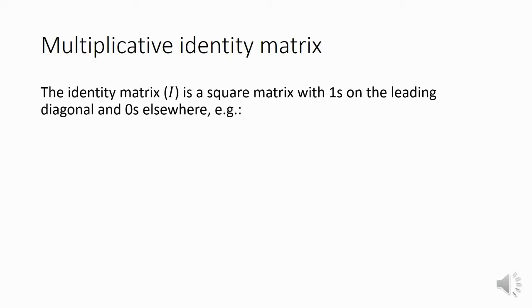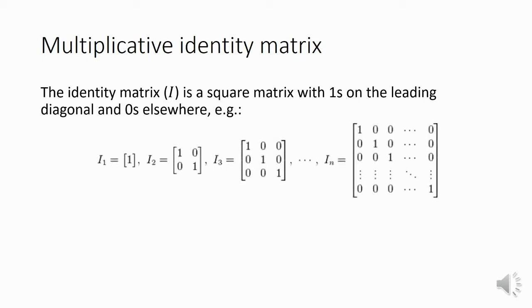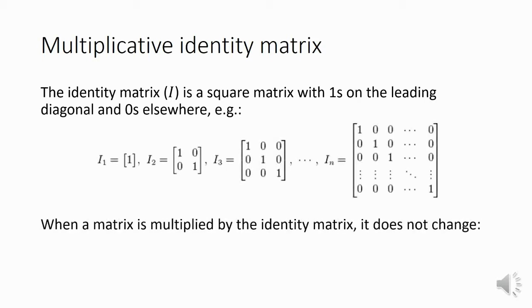So here's your definition for an identity matrix again. It's a square matrix with ones on the leading diagonal and zeros elsewhere. For example, your 1x1 identity matrix, a 2x2, a 3x3 and an nxn identity matrix.